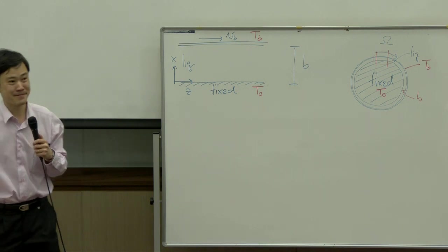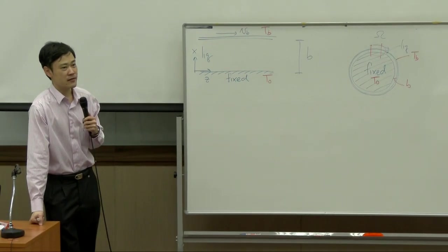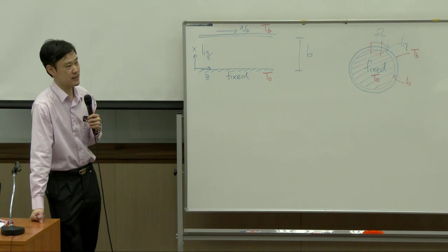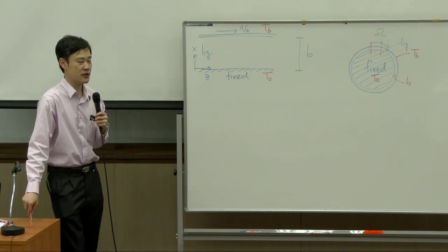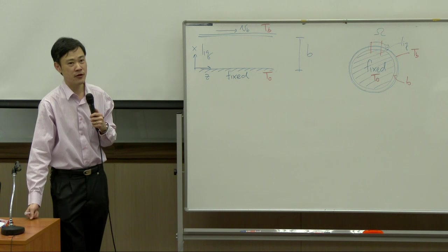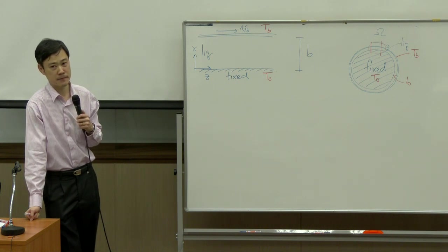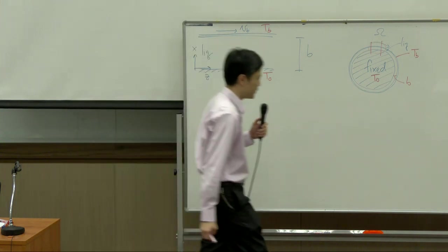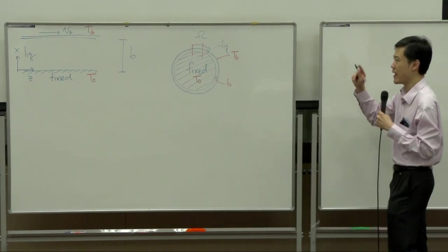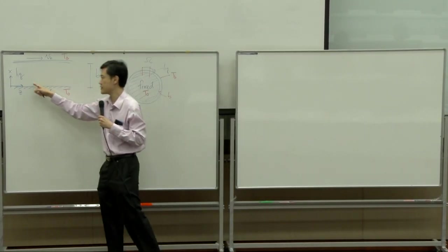We are still in the session of shell balance, so we will solve the problems using shell balance. Let us consider momentum balance first. If we decide to solve the momentum part first, what does the shell look like? In momentum, we have to analyze velocity components. This is a rectangular coordinate with X and Z axes, so we analyze velocity components Vx, Vy, and Vz.